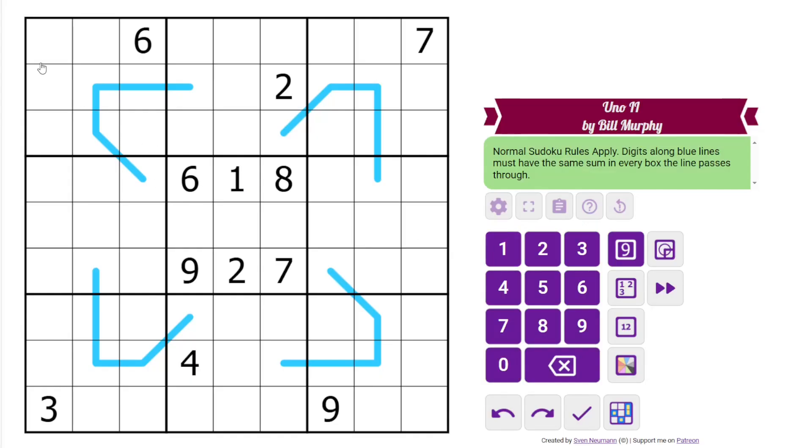And this is a region sum lines Sudoku, so we have normal Sudoku rules, 1 to 9 in each row, column, and 3x3 box. Additionally, we have some blue lines in the grid, and in each region that the line passes through, the sum of the digits on the line must be the same. And in this puzzle, there are a lot of cells that are the only cell in a box that are on the line. So what this is saying in this puzzle is, this cell must be the sum of these cells and the sum of this single cell.